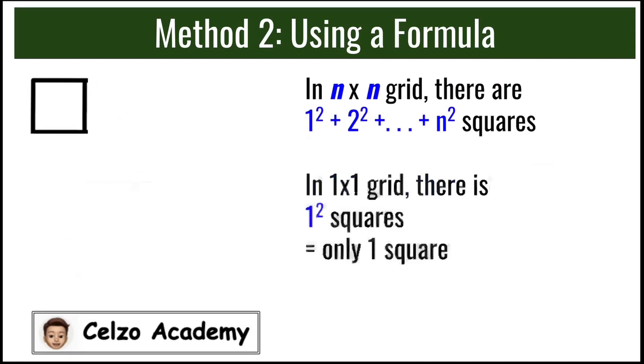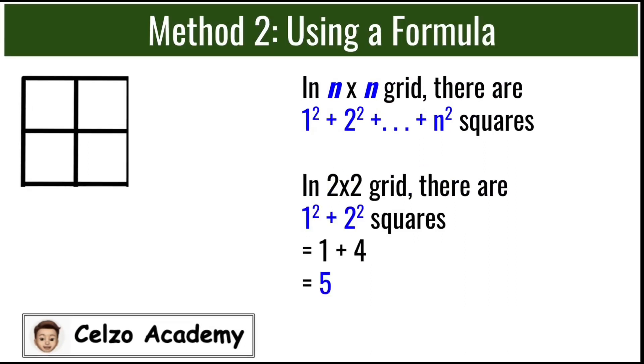This means that if we have a 1x1 grid, there is only 1 square, which is 1 to the second power. If we have 2x2 grid, using the formula, we will have 1² + 2². So we have 5 squares total.